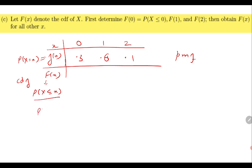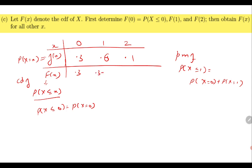P(X ≤ 0) is the same as P(X = 0), so it equals 0.3. P(X ≤ 1) equals P(X = 0) + P(X = 1), so you keep adding previous values: 0.3 + 0.6 = 0.9. And P(X ≤ 2) adds 0.1, giving 1.0. When you compute the CDF at the maximum value, you always get 1 because you have added all probabilities. So F(0) = 0.3, F(1) = 0.9, F(2) = 1.